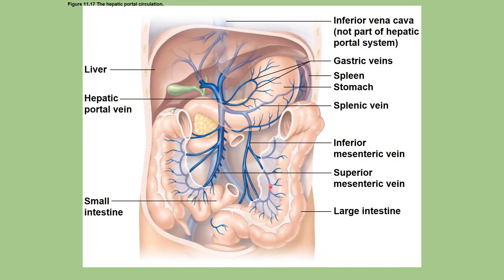In the abdomen, there is some special circulation, such as the hepatic portal circulation. Hepatic refers to the liver, which filters toxins out of the blood and therefore has an extensive blood supply. Also visible in this region are the gallbladder, stomach, and spleen. Anything gastric refers to the stomach.